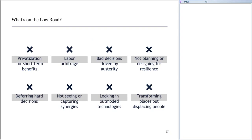A critical low road problem is not seeing or capturing synergies. In this century we're seeing more interrelated assets. For example, in California there's an issue with stormwater management and an issue with freshwater management because of drought, but investments in freshwater are typically not handled by the same entities in government that handle stormwater investments. How do you cut across the silos and see that a single investment in water infrastructure can benefit both? There's also locking in outmoded technologies — how do we make sure we build into the useful life of an asset the ability to upgrade it economically? And how do we make sure that we transform places without displacing people, allowing those living there to benefit from recovery rather than being forced out?